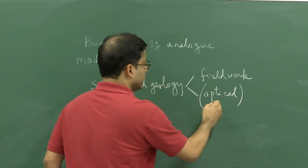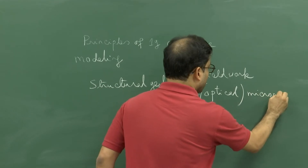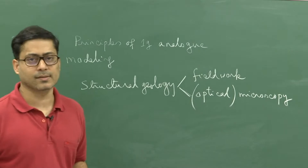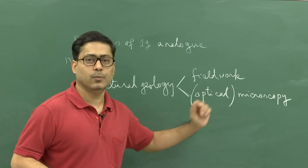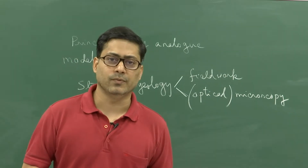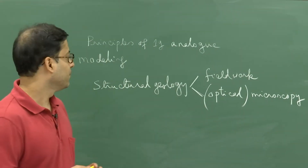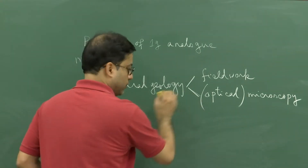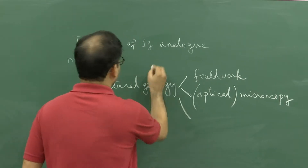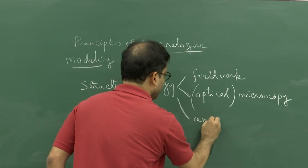If there is any doubt about the deformation, we want to cross-check. So there is another approach: looking at structural geology through optical microscopy. Deformations that are ambiguous can be cross-checked under an optical microscope. Using a microscope with higher resolution, we can have a third approach — and here comes the analog model, which is the topic today.